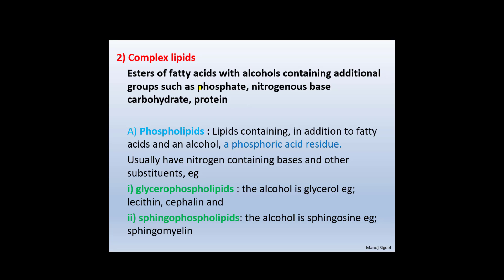Complex lipids are esters of fatty acids with alcohols containing additional groups such as phosphate, nitrogenous bases, carbohydrates, and proteins. The most important complex lipid is phospholipid — this is very important and short questions can be asked about it. Phospholipids contain fatty acids, an alcohol, and a phosphoric acid residue, and usually have nitrogen-containing bases. Glycerophospholipids have glycerol as the alcohol — examples include lecithin and cephalin. Sphingophospholipids have sphingosine as the alcohol — example: sphingomyelin.